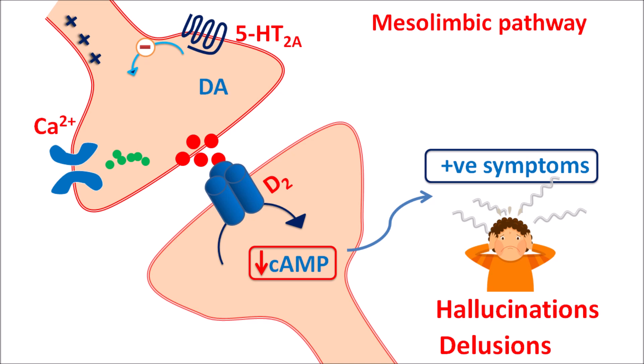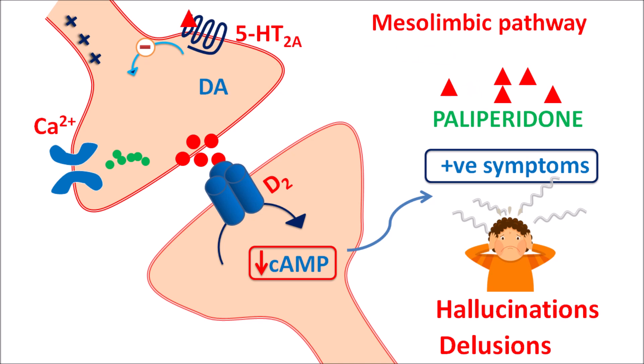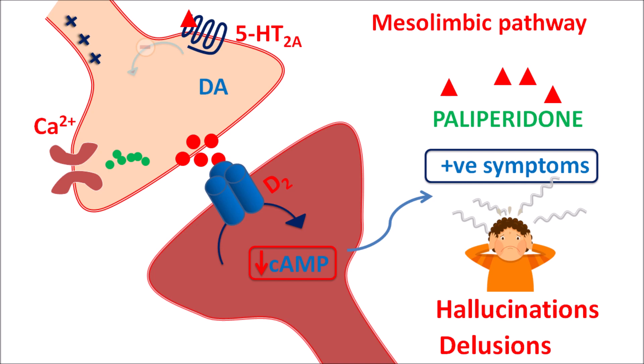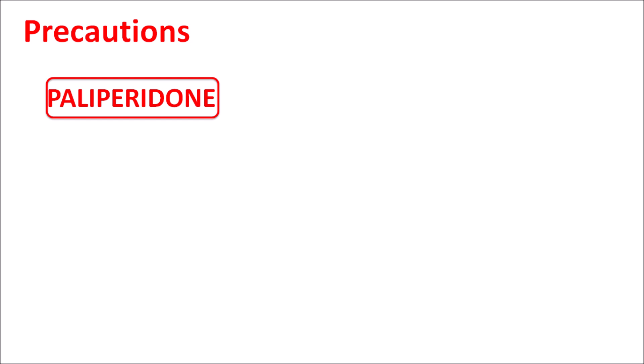Paliperidone, as an atypical antipsychotic, blocks presynaptic 5-HT2A receptors, removing inhibition so more dopamine is released. At the same time, paliperidone blocks D2 receptors, reducing dopaminergic transmission. Through this combination of actions, the drug reduces positive symptoms in psychosis.